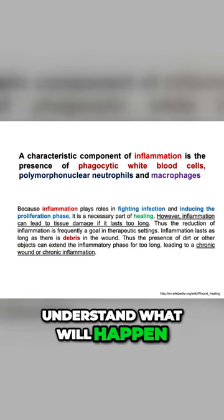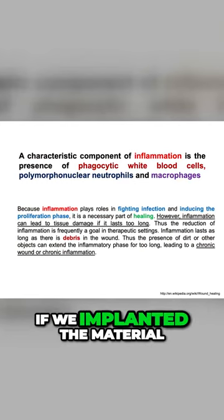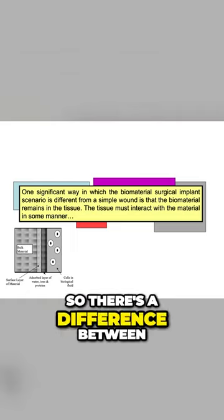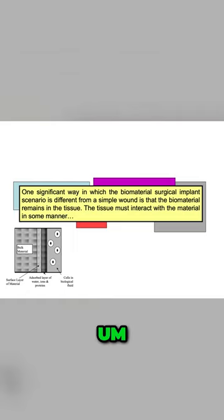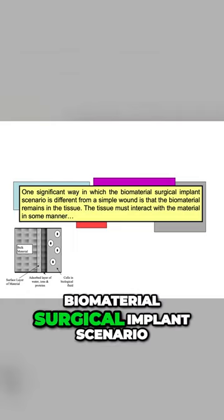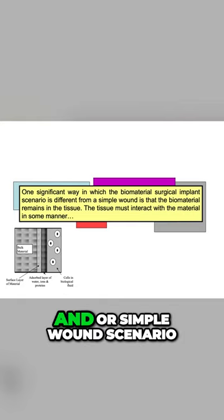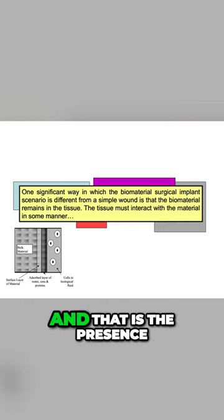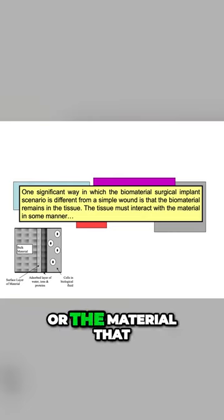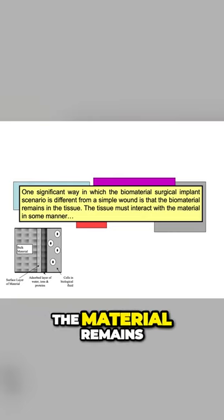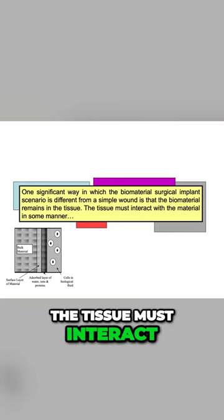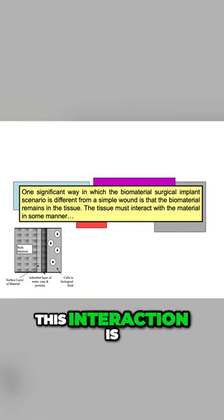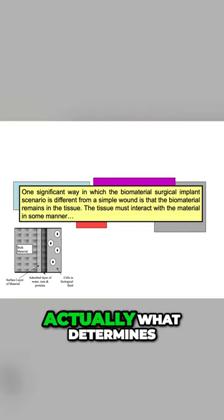We would like to understand what would happen if we implanted the material inside the body. There is a difference between a biomaterial surgical implant scenario and a simple wound scenario, and that is that the material remains in the tissue. The tissue must interact with the material in some manner, and this interaction is what determines